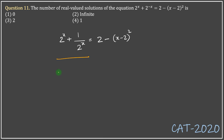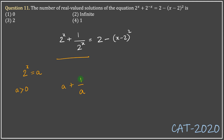Notice that the expression on the left-hand side, 2 to the power x plus 1 over 2 to the power x, is of the form: the sum of a number and its reciprocal. If we consider 2 to the power x to be 'a', then the left-hand side becomes a plus 1 over a. Since 2 raised to any real power will always be positive, a is greater than 0. For any positive real number, a plus 1/a is always greater than or equal to 2, so the left-hand side is always ≥ 2.